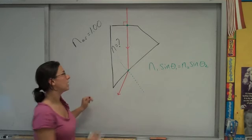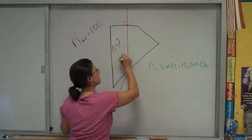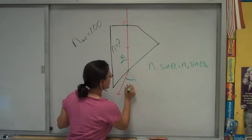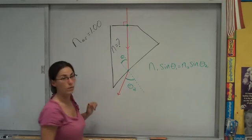So if you're using this boundary, this is the angle of incidence, theta 1, if you will. And this is the angle of refraction, theta 2, if you will.